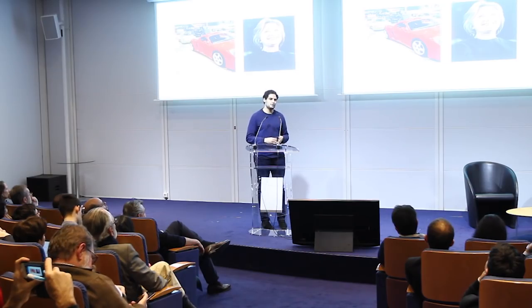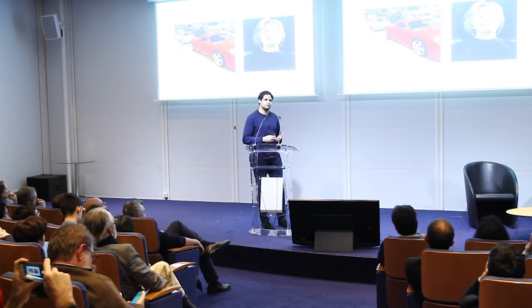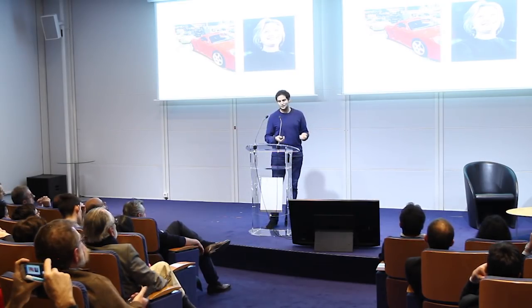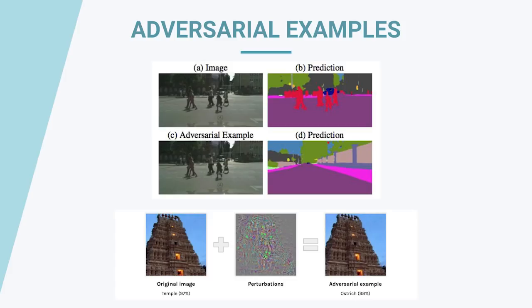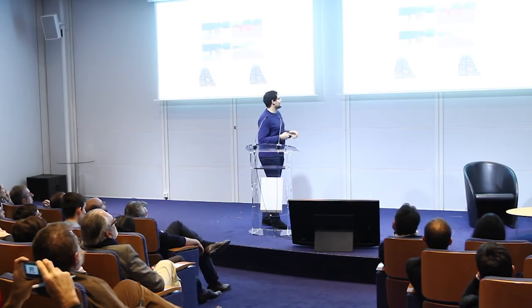The first risk is adversarial examples — hackers can use them to get into or compromise your system. This kind of hack can be done on purpose. As an example, by changing just some pixels in the first image, we can trick the algorithm so it cannot detect that there is a pedestrian in the image, which can be very dangerous in the case of a self-driving car.